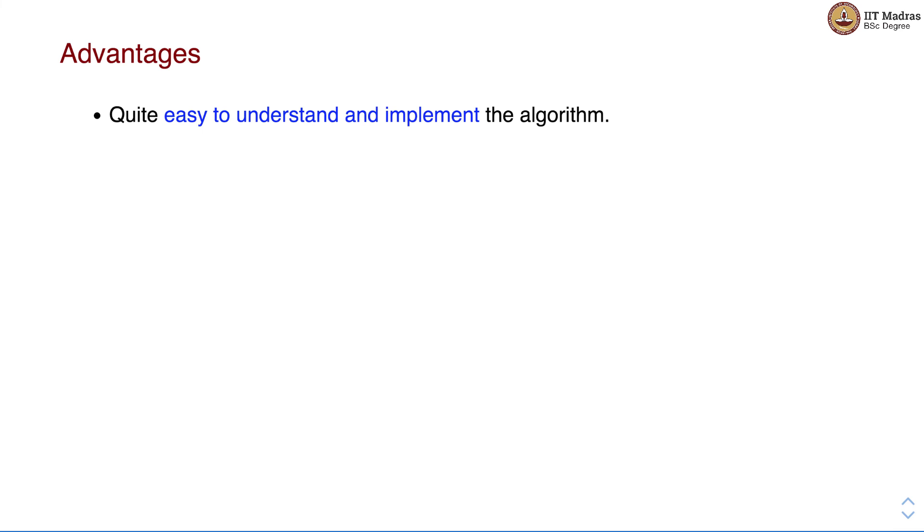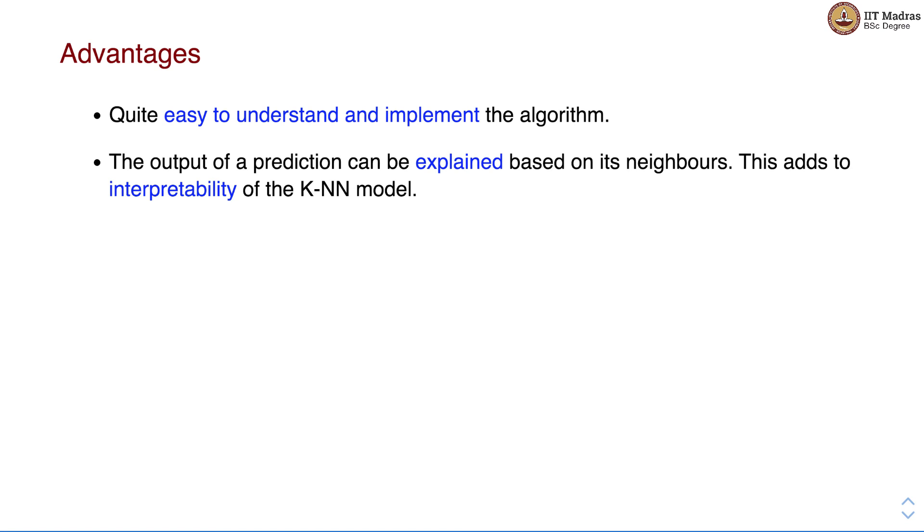So KNN is quite easy to understand and implement. The output of a prediction can be explained based on its neighbors. This adds to interpretability of the KNN model.